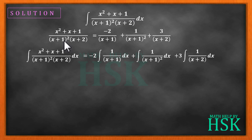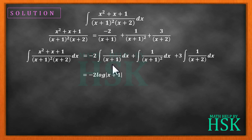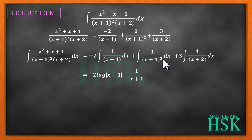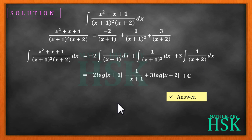Solving these integrals: the first gives -2·log|x + 1|, since ∫1/(x) dx = log|x|. The second gives -1/(x + 1), applying the power rule with n = -2. The third gives 3·log|x + 2|. So the final answer is -2·log|x + 1| - 1/(x + 1) + 3·log|x + 2| + C.